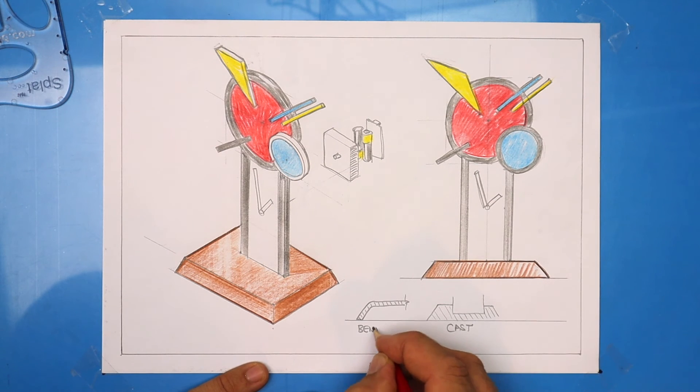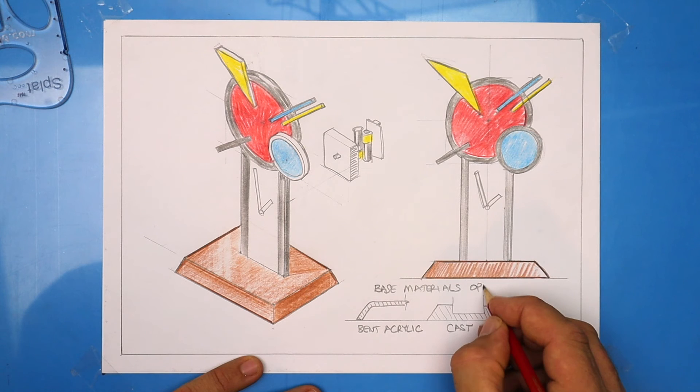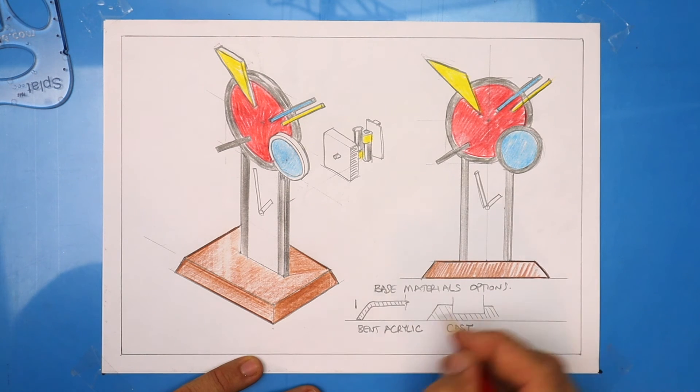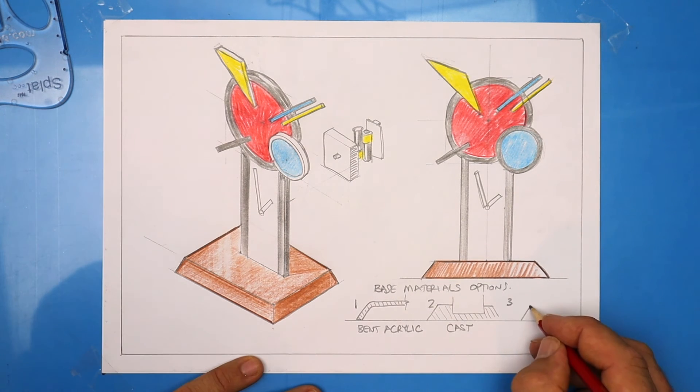Try to include at least three options that you've thought of for each of the elements on your design. The base for instance. I could bend acrylic down on four sides. I could cast resin around the column, or I could put a slot in some MDF. That little symbol is the cutoff symbol by the way. I'm running out of room there.